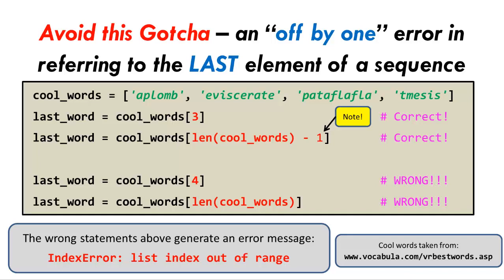Consider the cool_words list here. It has four items numbered 0, 1, 2, and 3. So referring to the [3] item is fine. That refers to the last item in the sequence.